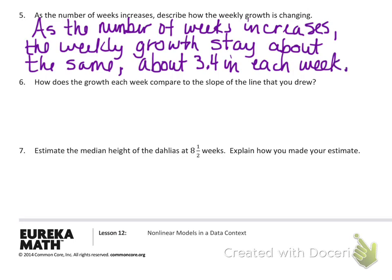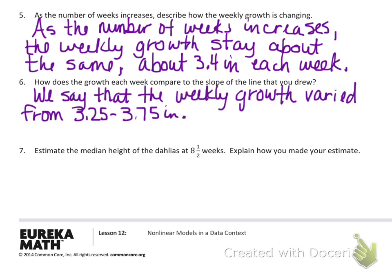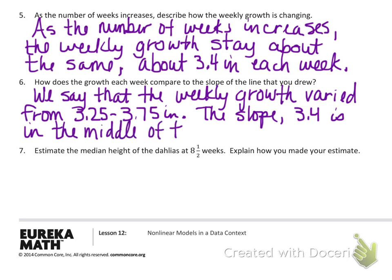How does the growth each week compare to the slope of the line you drew? We saw the weekly growth went from 3.25 up to 3.75. The slope of 3.4 is in the middle of those values — it's kind of an average growth per week. It varies a little bit each week, but centers on about 3.4 to 3.5.